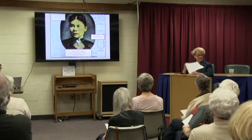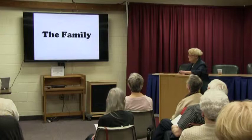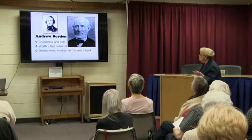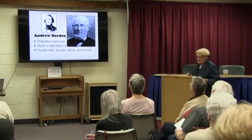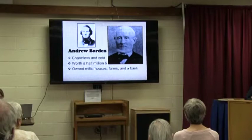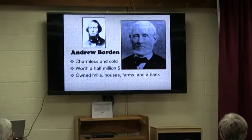We want to look at that when we look at Lizzie's writing after we recap the time. Let's go. The family — we'll start with Andrew Borden. Charmless and cold. Worth half a million at the time. Owned mills, houses, farms, and a bank. His father was a fish peddler, and he was an undertaker of sorts, but he only dealt with coffins.